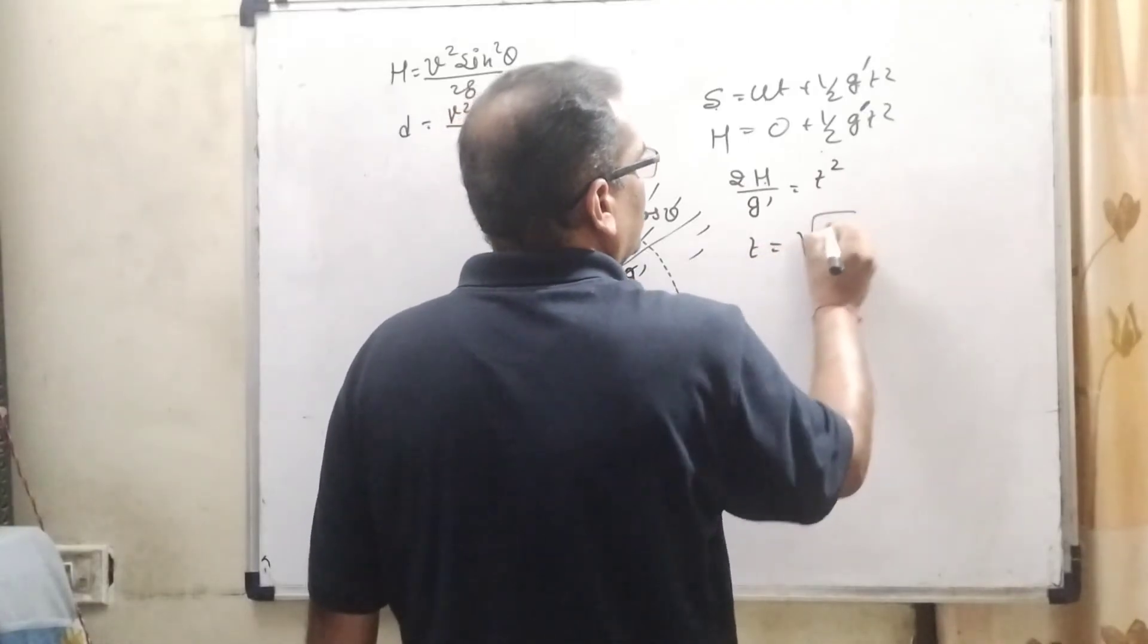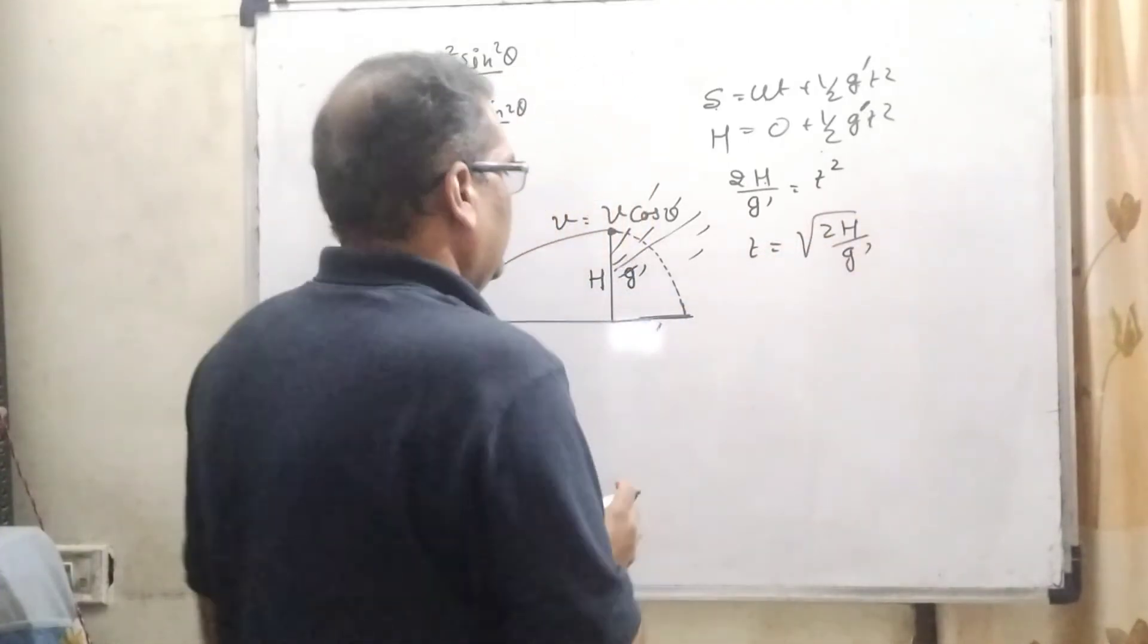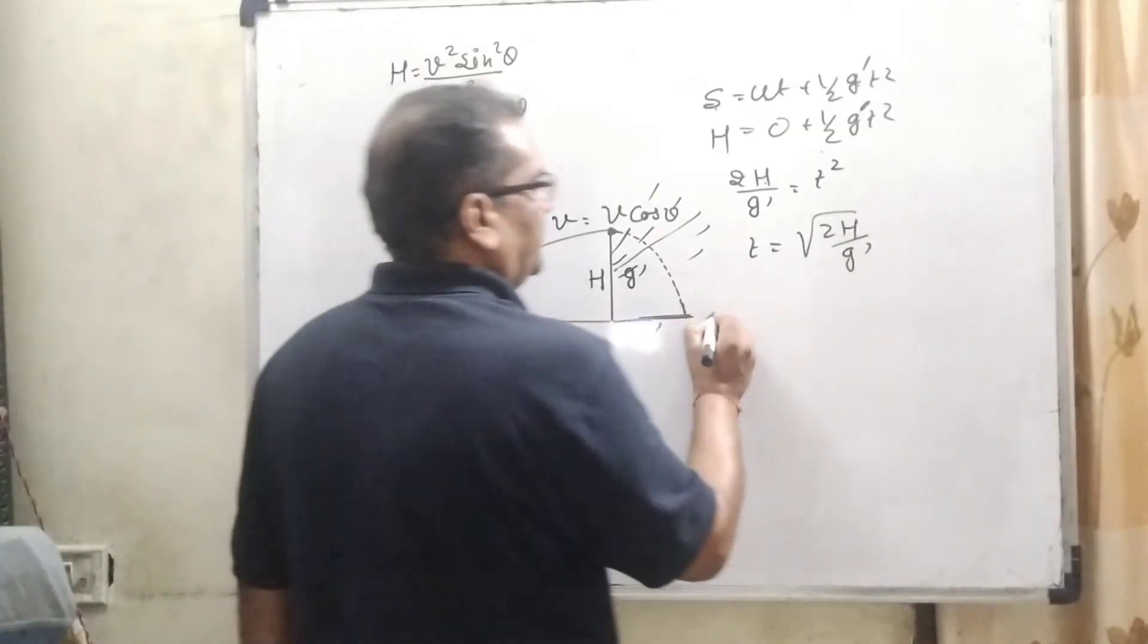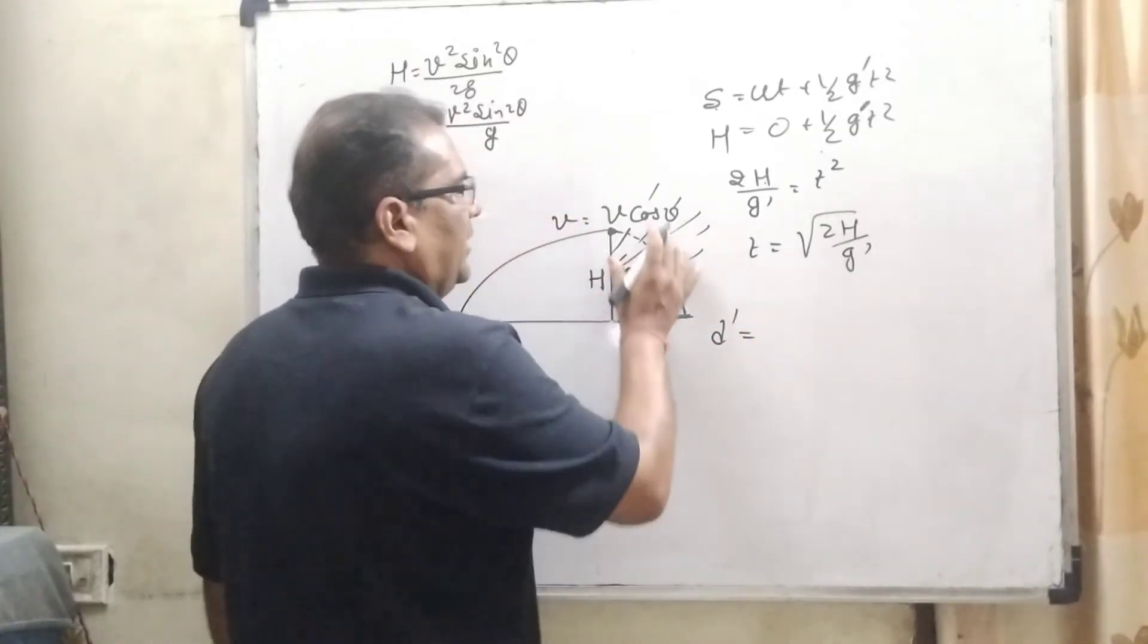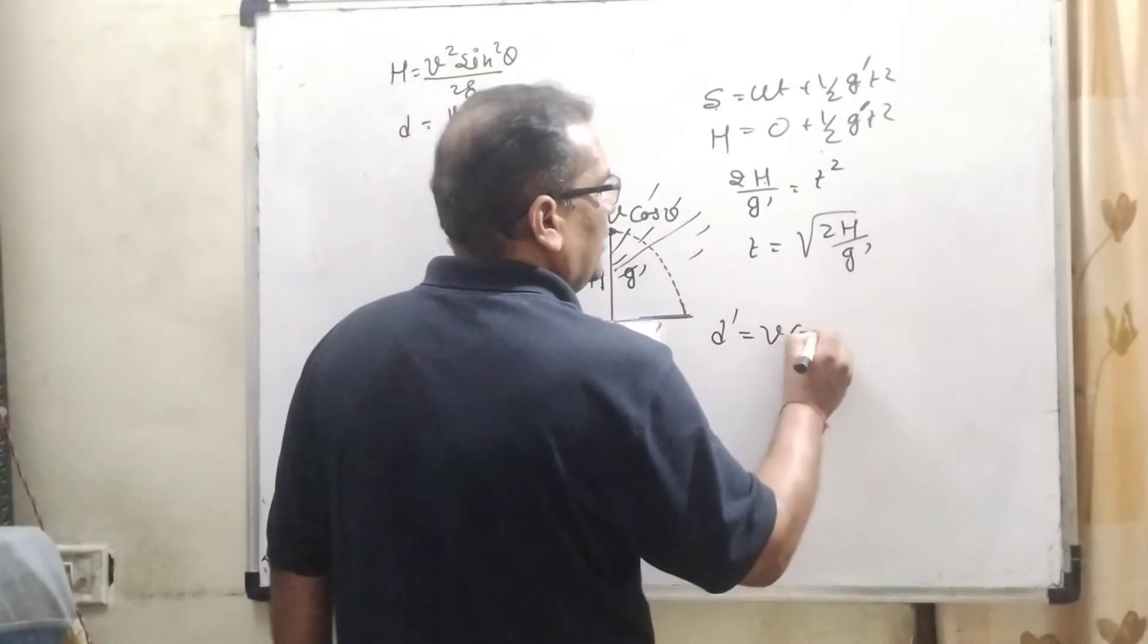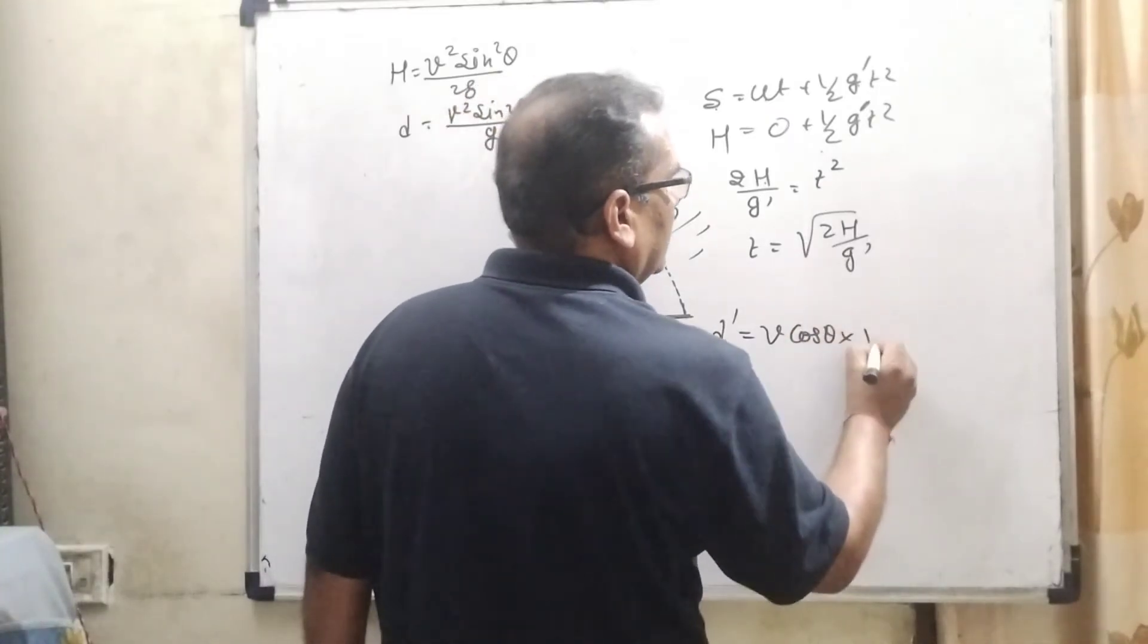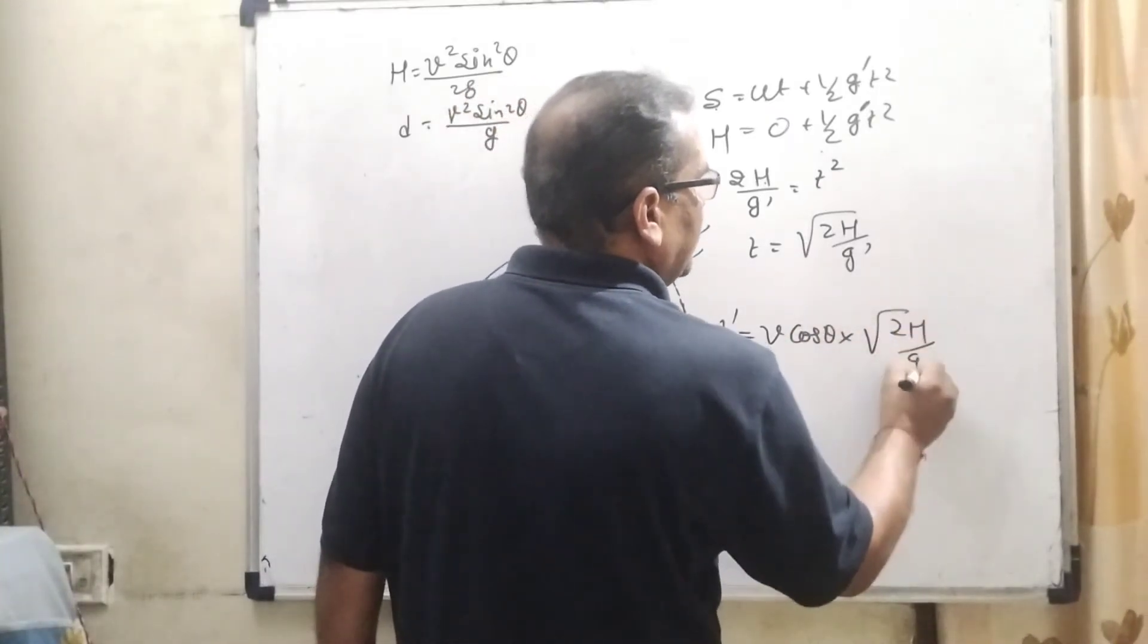Then for this distance, D dash can be written as the component of velocity V cos theta times the time of flight root 2h by g dash.